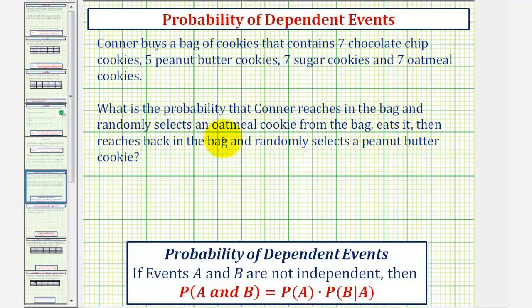In this case, the event of selecting an oatmeal cookie and the event of selecting a peanut butter cookie are not independent events because the probability of selecting a peanut butter cookie is affected by first selecting an oatmeal cookie and not replacing it because Connor eats the cookie. So we have two dependent events that states if events A and B are not independent, then the probability of A and B equals the probability of A times the probability of B given that A has already occurred.